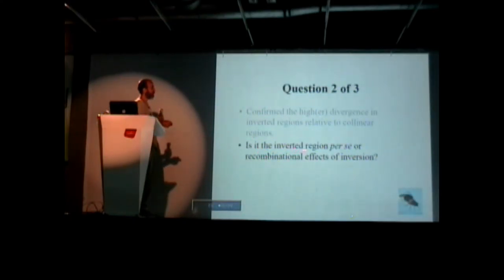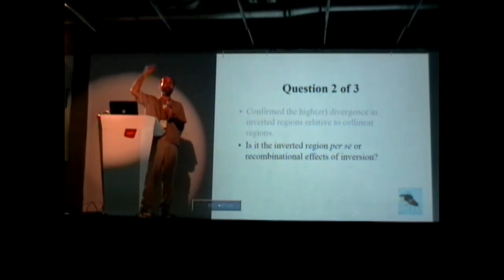So the question now is, is it the inverted region per se, or does it have anything to do with recombination? All we've shown so far is that the inverted region has high divergence, other parts have low. But does it have anything to do with recombination?